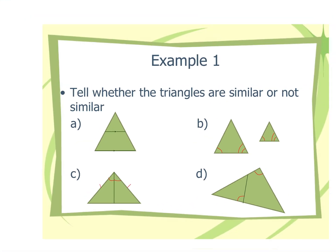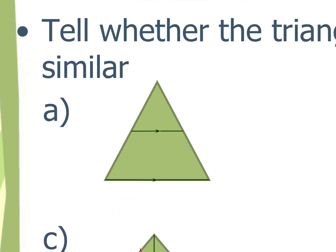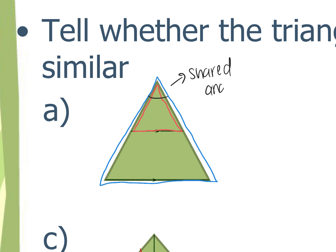Let's do some examples — we're going to tell whether the triangles are similar or not. Take a look at the first one. The two triangles it's referring to — outline them in different colors: this red one at the top and this blue one at the bottom. Our goal is to try to figure out if we can prove two angles are congruent between these two triangles. Does anyone notice at least one angle that's congruent? Javonsky — the angle at the top. Why would that angle be congruent? It's shared — very good, Diego — it's shared between the two triangles.